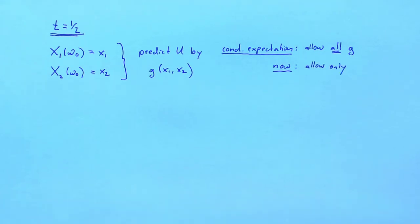We allow only functions that can be written like so, where b0, b1, and b2 are parameters that we can pick to be any value we like. Let's call predictions based on such linear functions linear predictions.